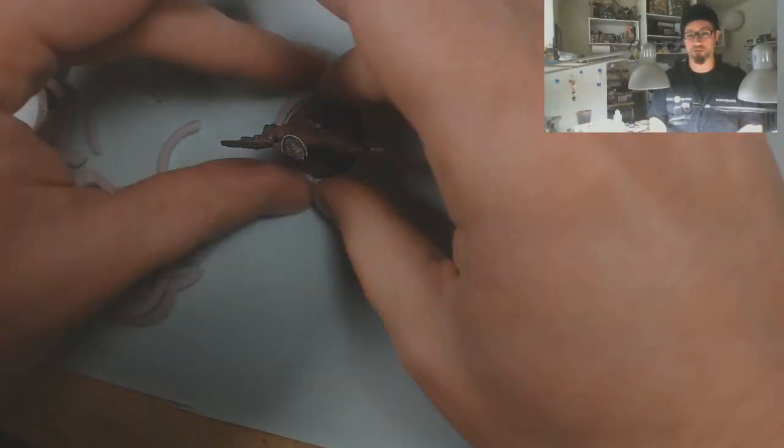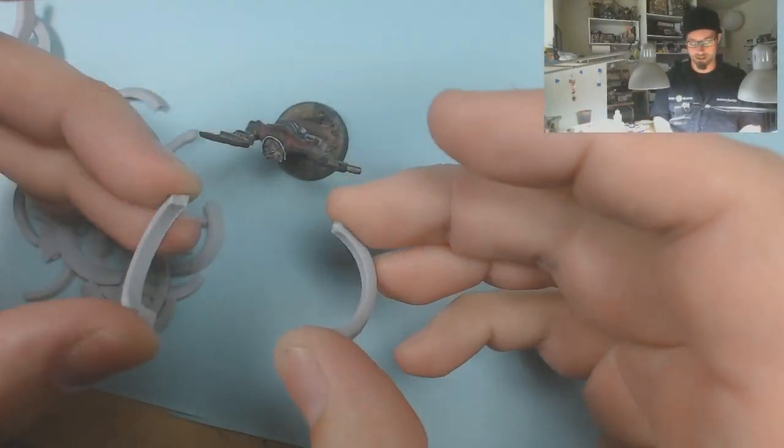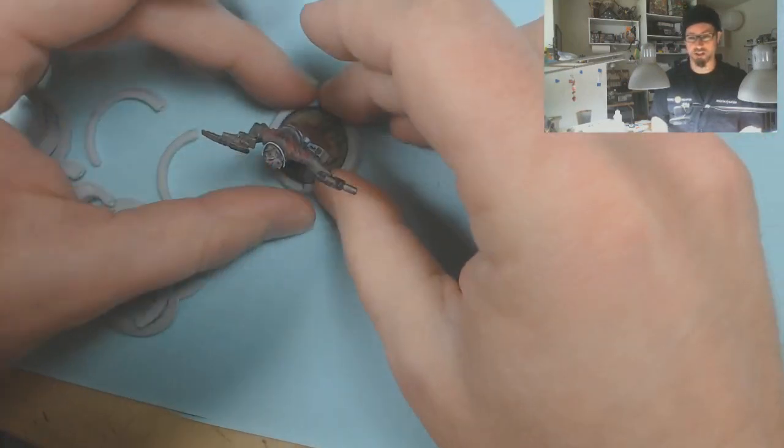Hey folks, Mr. Justin here with Secret Weapon Miniatures and a product preview for you. Coming this April, I have a two-part conversion ring that links together to turn your 25 millimeter bases into 32 millimeter bases.